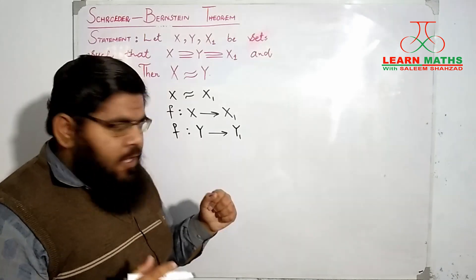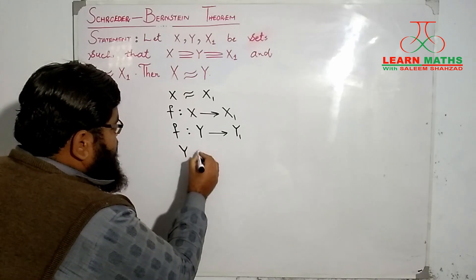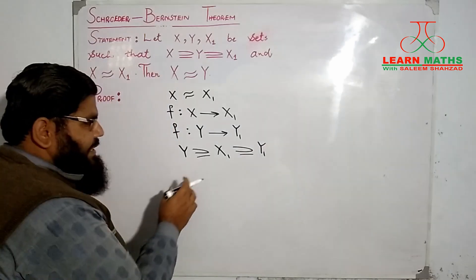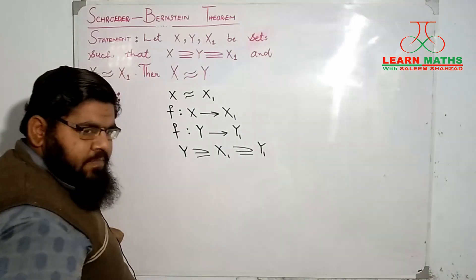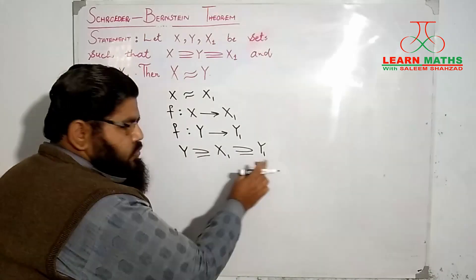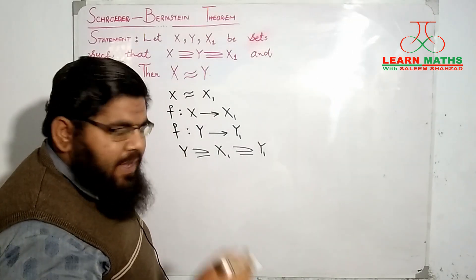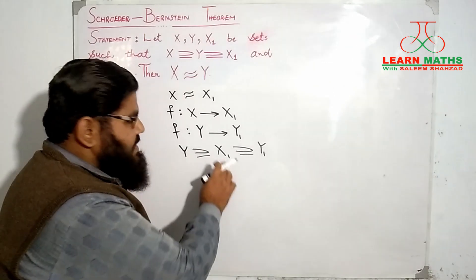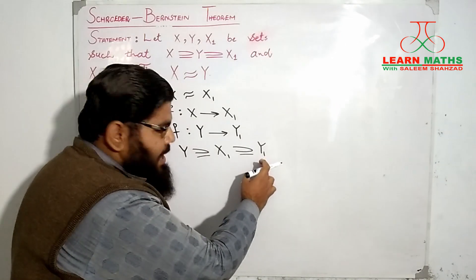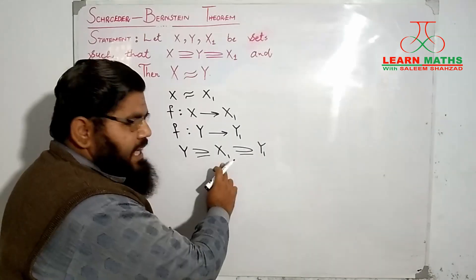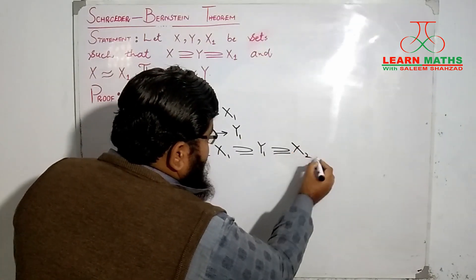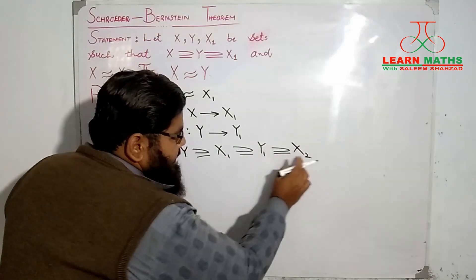So now we have Y as superset of X₁, which is superset of Y₁, such that the cardinalities of Y and Y₁ are the same. From here we can make a bijection between Y and Y₁ and restrict that bijective map to the subset X₁ of Y. This gives us another set X₂, which is a subset of Y₁, such that the cardinalities of X₁ and X₂ are the same.